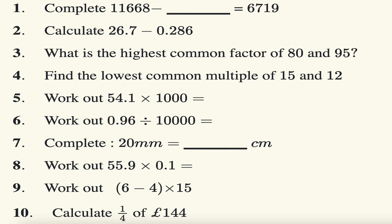Right guys, the last part for today's video. Complete this sum: 11668 minus something equals 6719. Well, if I do 11668, 8 take away 6719. Well, 8 take away 9 I can't do, so I'm gonna have to borrow, so that becomes a 5, that becomes a 1. 18 take away 9 is 9. 5 take away 1 is 4. 6 take away 7 I can't do, so I have to borrow.